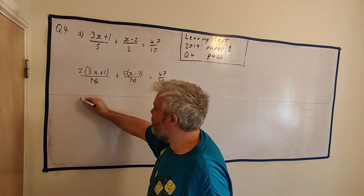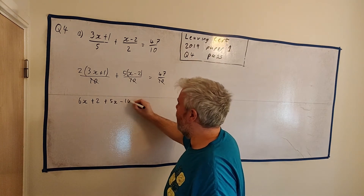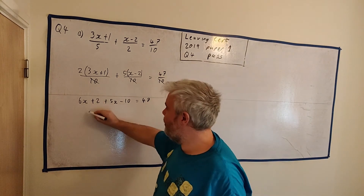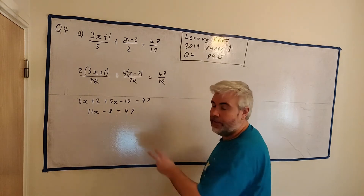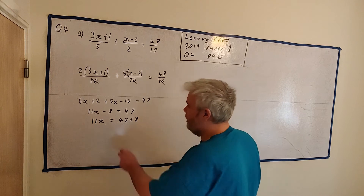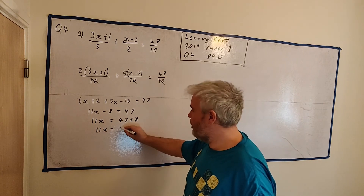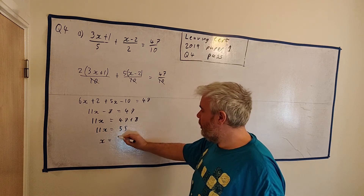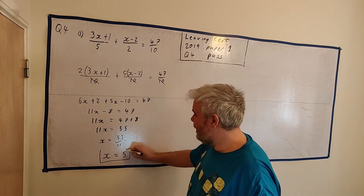Let's multiply it out. We have 2 times 3x is 6x, 2 times 1 is 2, 5 times x is 5x, and 5 times minus 2 is minus 10 — all equals 47. Now collect like terms: 6x plus 5x is 11x, and 2 minus 10 is minus 8, equals 47. Add 8 to both sides to isolate x: the minus 8 disappears and 47 plus 8 gives 55. So 11x equals 55. Divide both sides by 11, and x equals 5. That is the final answer for part A.